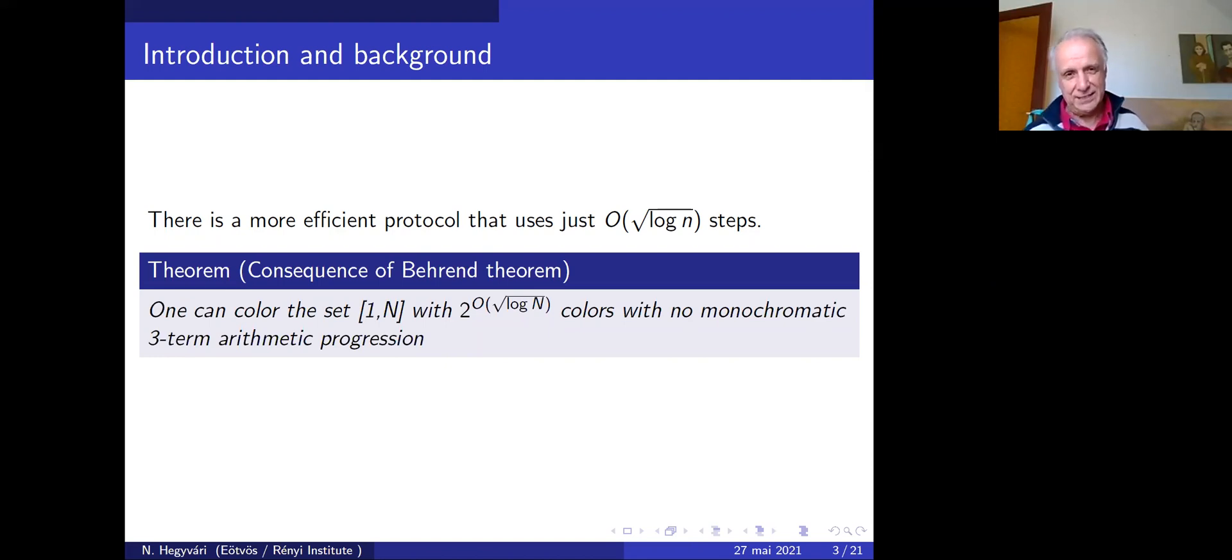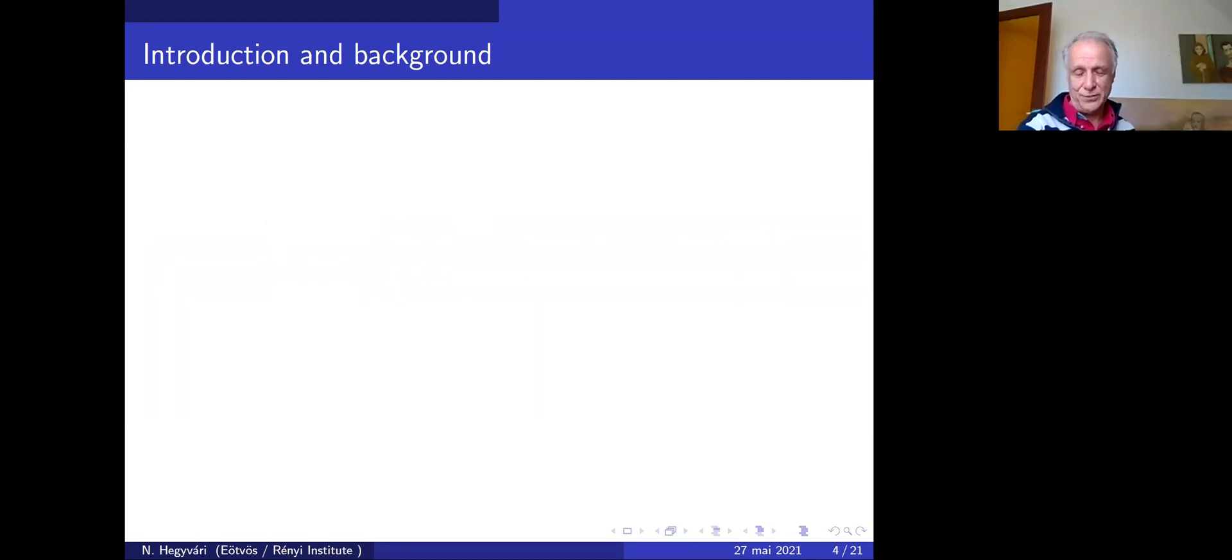The main tool is Baranyai's theorem for arithmetic progressions. One can color the first n numbers with 2^(√log n) colors with no monochromatic three-term arithmetic progression, achieving constant times √log n communication.